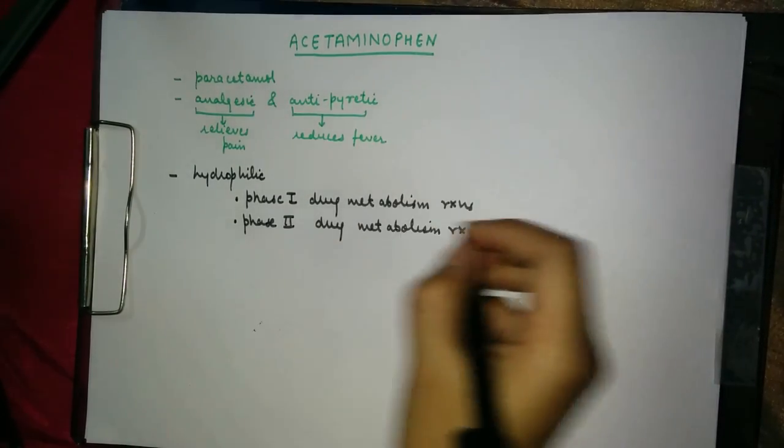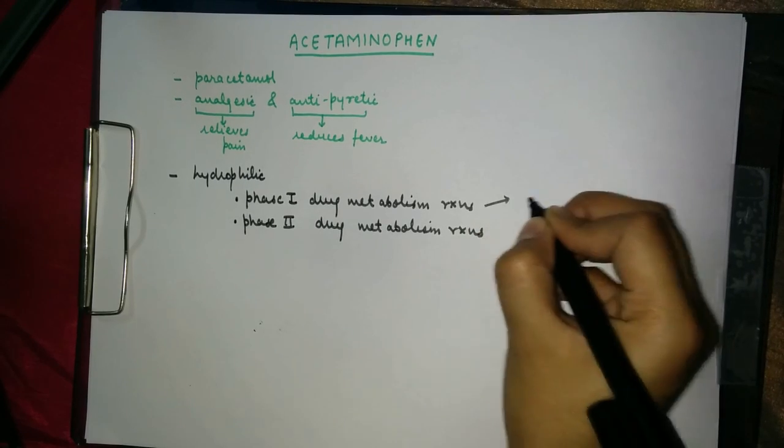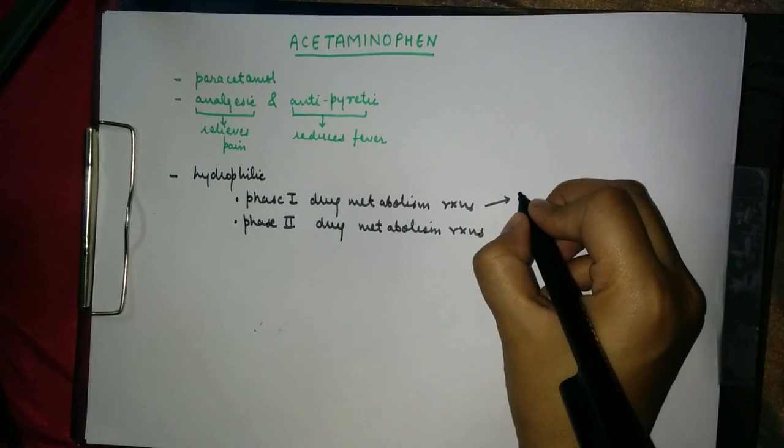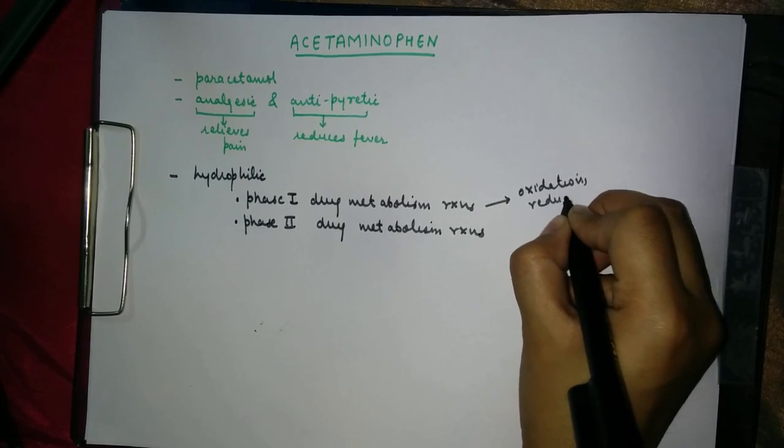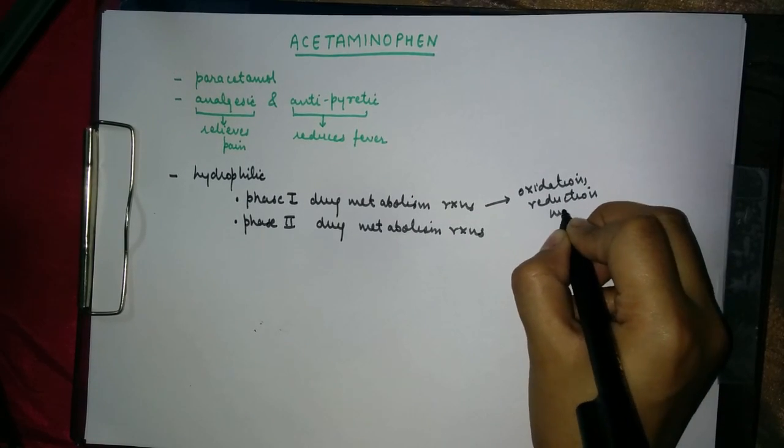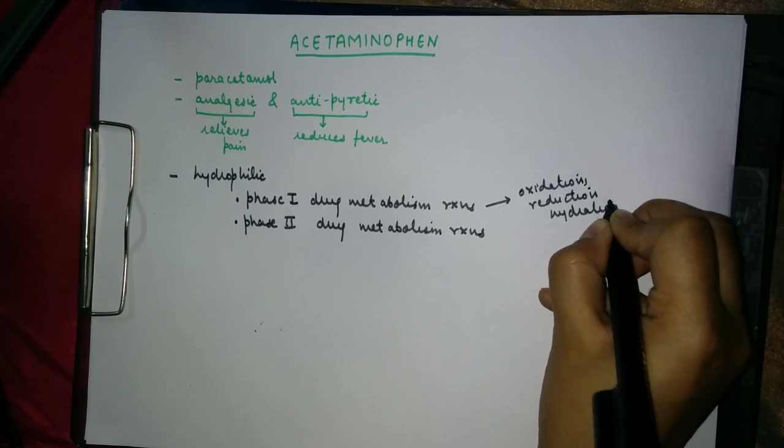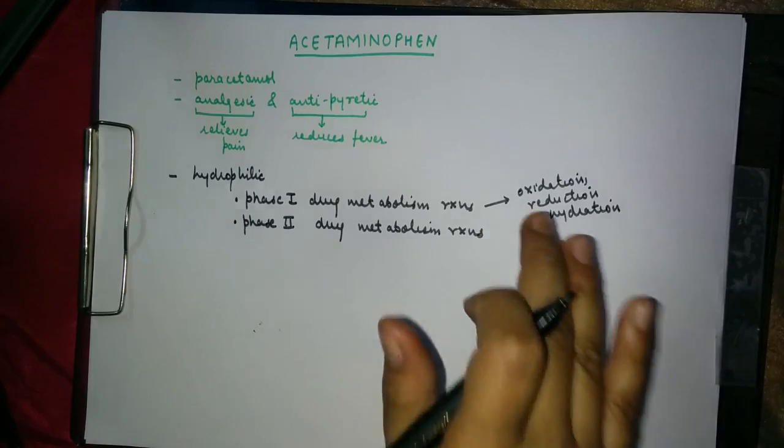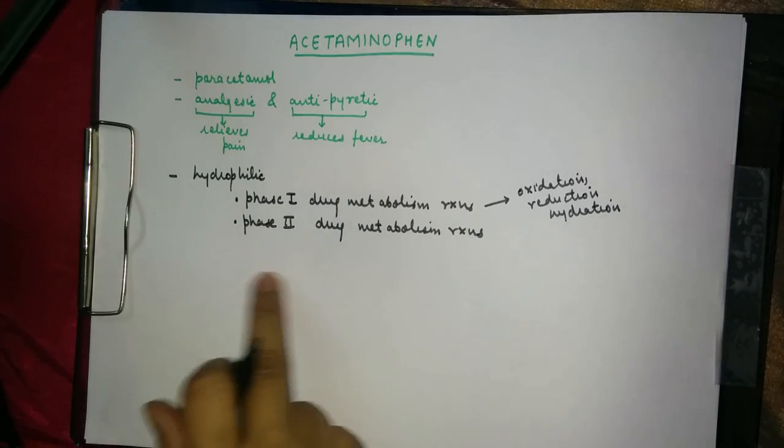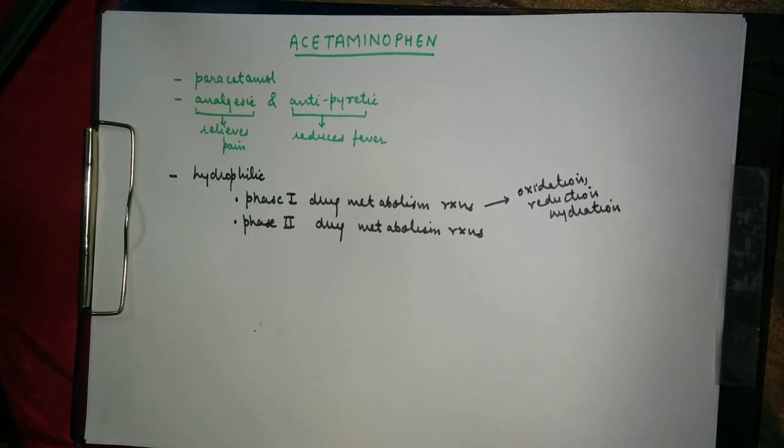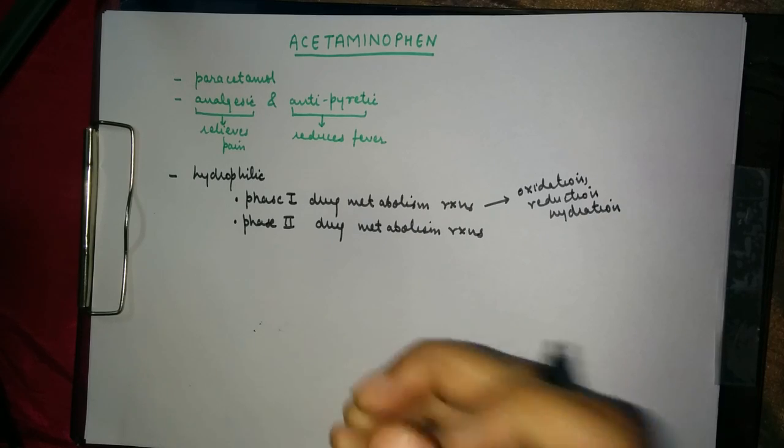In phase 1 drug metabolism reactions, the reactions which usually take place are oxidation, reduction, and dehydration. What basically happens in this phase is that certain groups present on the drug get exposed so that phase 2 reactions can occur accordingly to that exposed group.